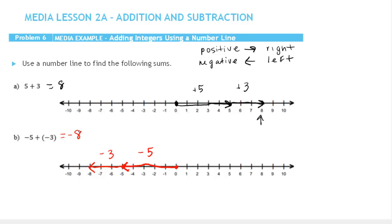This corresponds to what we learned with the chip model — it's the same idea. Since they're both positive, the positive distance is accumulating. We have the 5 and then another 3, and they're moving in the same direction. So you can think of adding 5 and 3 to get 8.